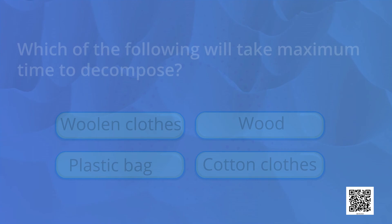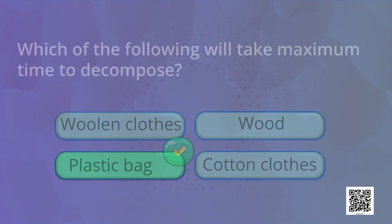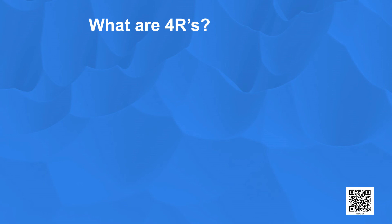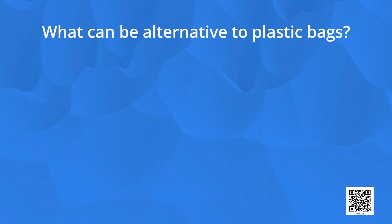Next question: Which of the following will take maximum time to decompose — woolen clothes, wood, plastic bag or cotton clothes? The answer is plastic bag, which takes the maximum time to decompose. What are the four R's? The answer is: first R is reduce, second R is reuse, third R is recover, and fourth R is recycle. What can be the alternative to plastic bags? The answer is we can use cotton or jute bags instead of plastic bags.